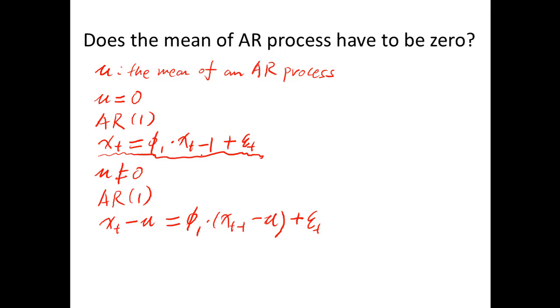So what if when mu is not equal to zero, I want to write an AR2 process. What should I do? This is how you write it, AR2.